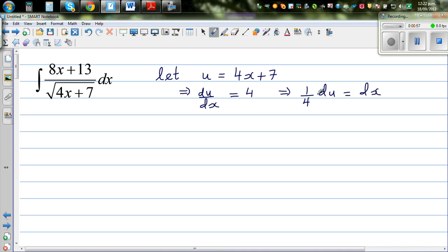So in place of dx, I'm going to do the substitution of 1 quarter du or du over 4. Let me rewrite this again. u is equal to 4x plus 7. Now my aim is to get 8x plus 13 from this. So what I'm going to do is multiply the whole thing by 2. So this becomes 2u is equal to 8x plus 14.